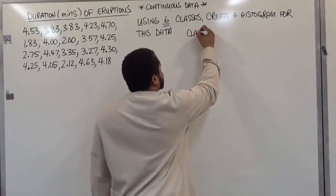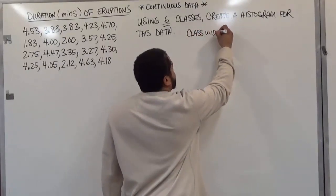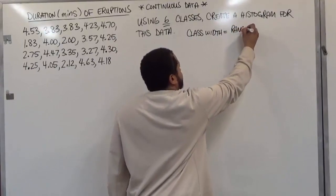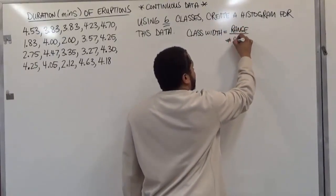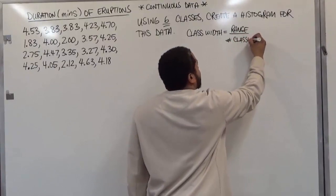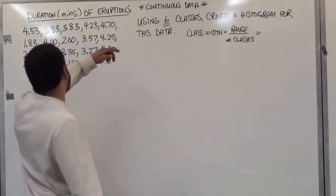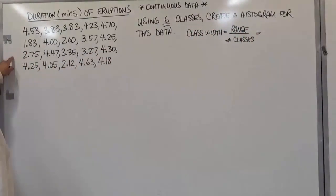So our class width is going to take the range which is the high minus the low, and we're going to divide that by the number of classes that we desire here. The number of classes desired in this case is six because the question tells us. That's why it's double underline. So let's find the range here.